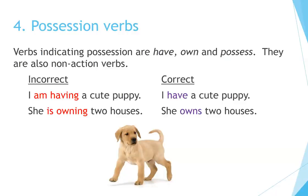Number 4: Possession verbs. Verbs indicating possession — have, own, and possess — are also non-action verbs. Incorrect: 'I am having a cute puppy.' Correct: 'I have a cute puppy.' Incorrect: 'She is owning two houses.' Correct: 'She owns two houses.'